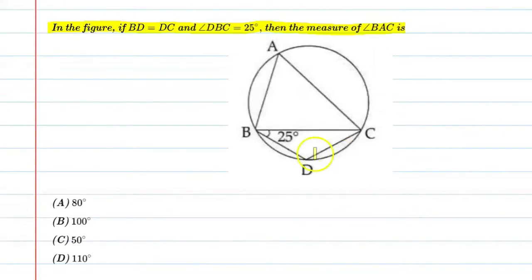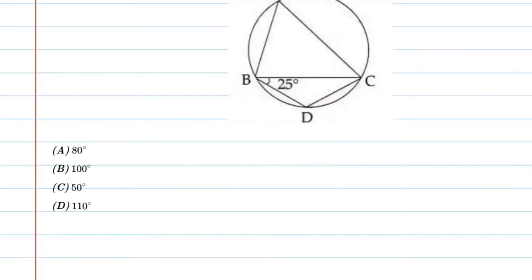Before we start, I will tell you that this concept is going to be a cyclic quadrilateral. So let's start with the triangle properties. First, let's write given. So what is given in this question?